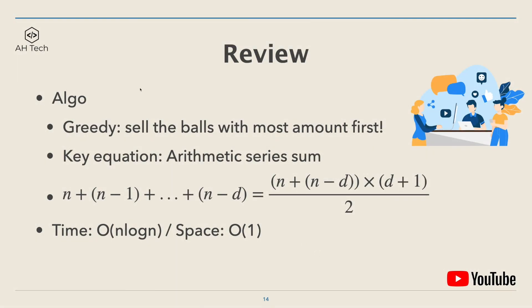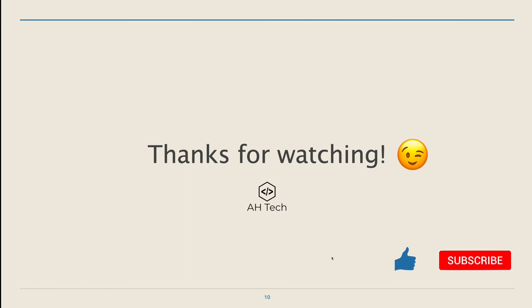Finally, let's review. The core algorithm is a greedy approach where we sell the balls with the most amount first. The key equation to calculate the value is the arithmetic series sum. The time complexity is O(n log n) since we perform sorting at the beginning, and the space complexity is constant. That's all for today — thanks for watching. If you like this video, please give it a like and subscribe to my channel, and I'll see you in the next one.